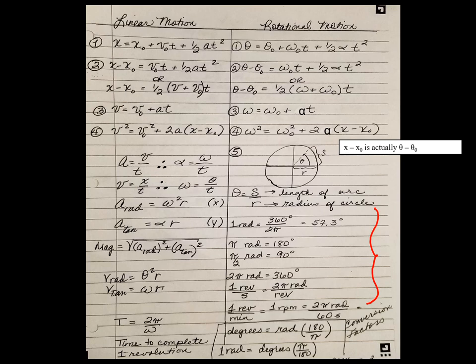These are your conversion factors. To the right, on the left you'll see radial acceleration and tangential acceleration, radial velocity, tangential velocity. You'll see period, which we've seen before. Period equals 2π over omega, and that period is the time it takes to complete one revolution around a circle.